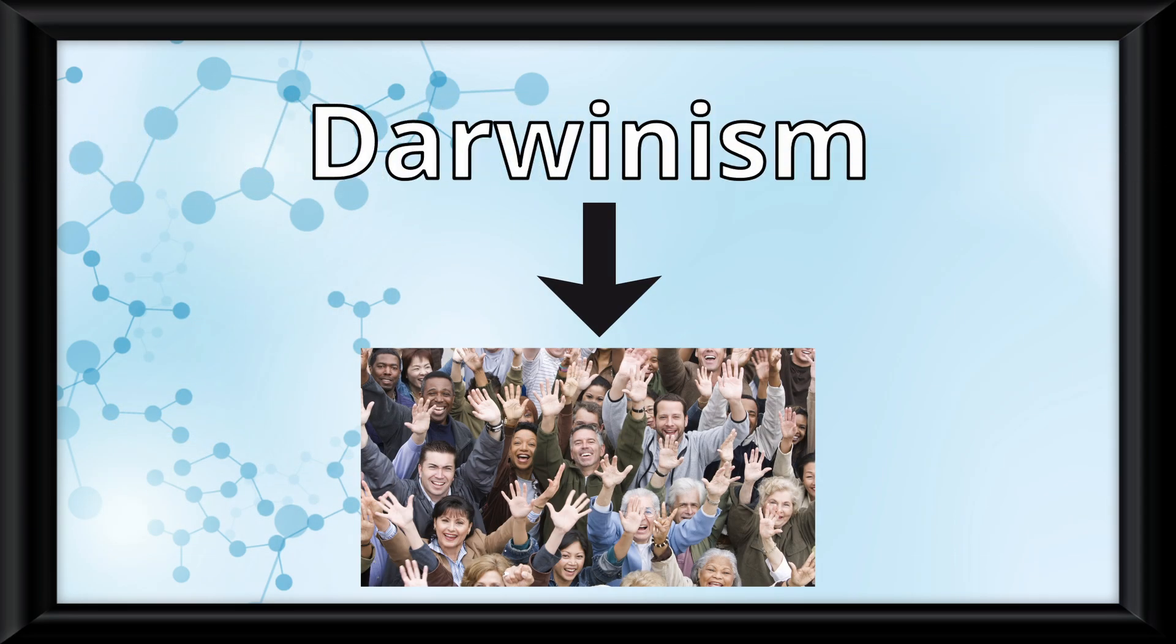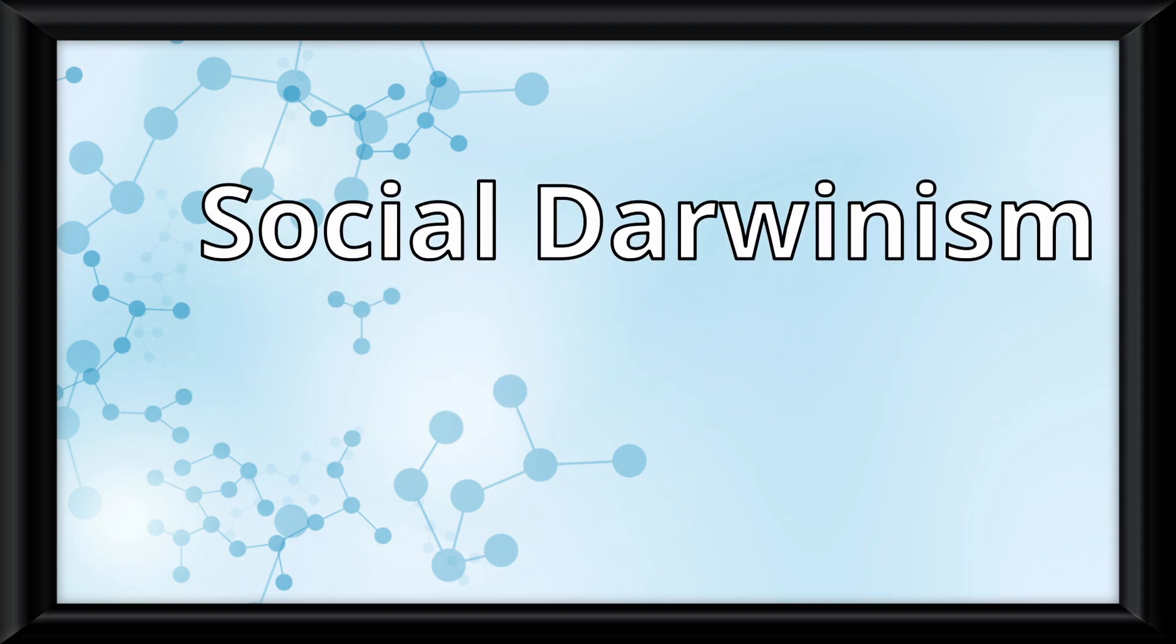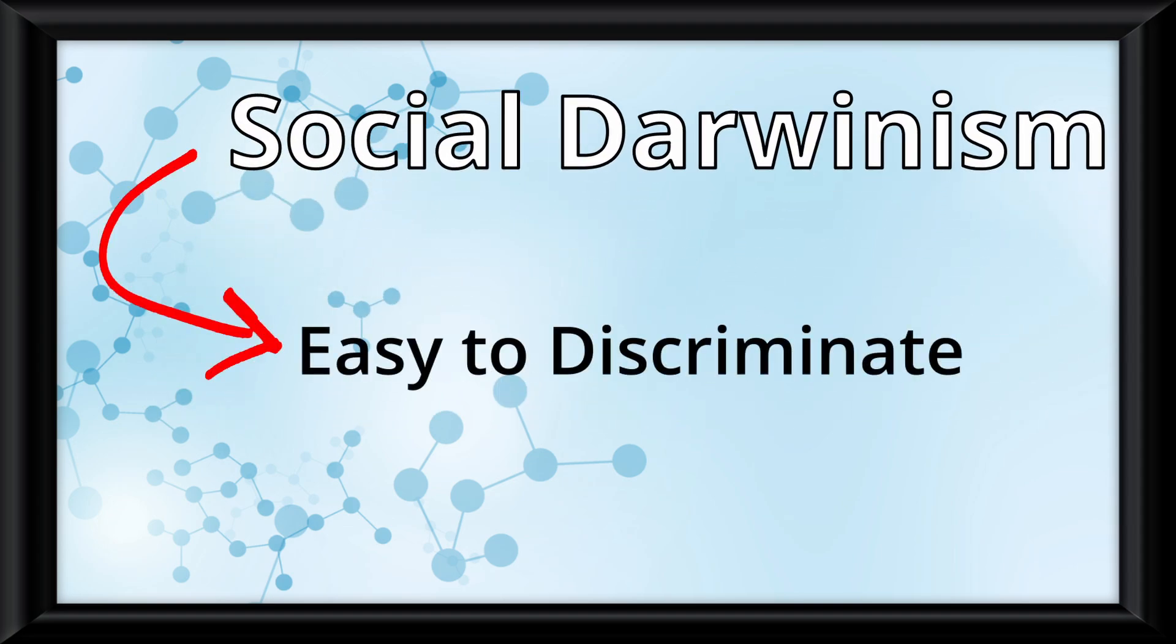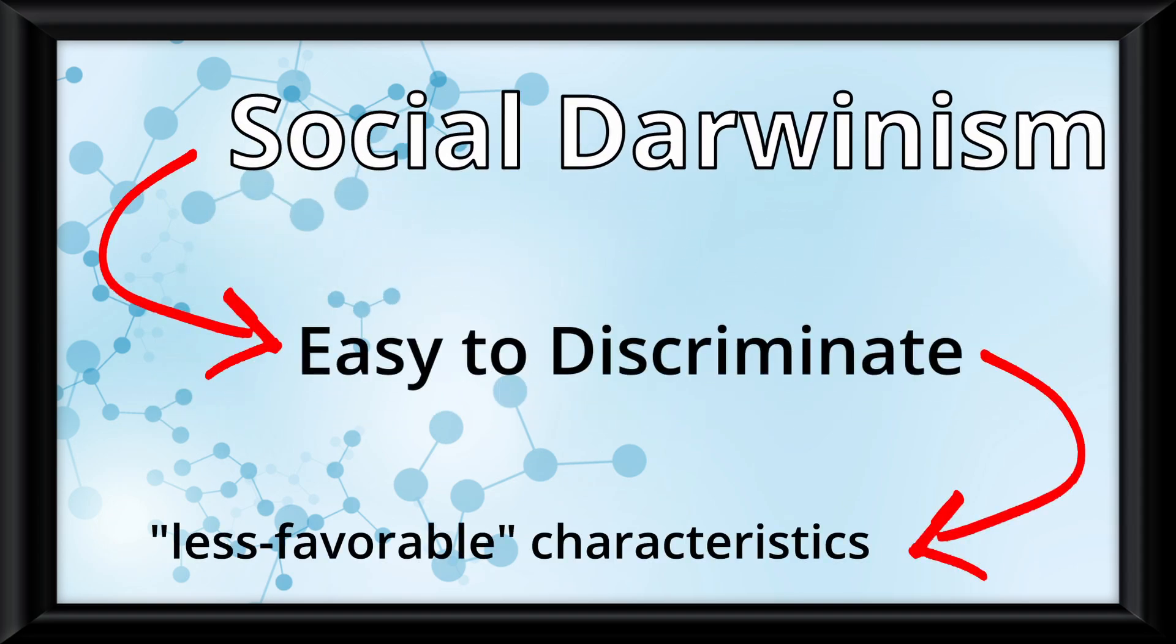The issue here is when you start applying natural selection to society, and it turns from Darwinism to social Darwinism. This is where it becomes easy to discriminate against others that have more, quote-unquote, less favorable characteristics.